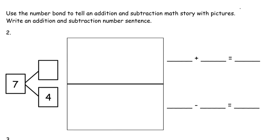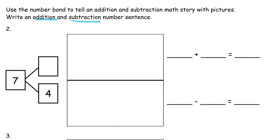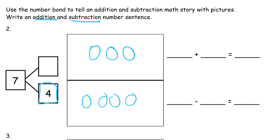We can move on to the next page. It says: use the number bond to tell an addition and subtraction math story with pictures, and write an addition and subtraction number sentence. So we have a total of seven, and the two parts of seven are four and three. If one part is four, the other part has to be three to have a total of seven. If we add the two parts together — three plus four — we get seven. Addition means adding with a plus sign: three plus four equals seven.